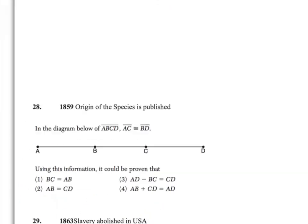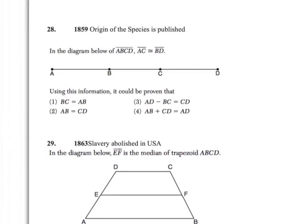Question 28 — they're telling us that AC is congruent to BD. If those two segments are the same, does that mean BC has to be the same length as AB? For example, if AC is 100 and BD is 100, does that mean each piece has to be 50? I don't think so. Think about the subtraction postulate for question 28.